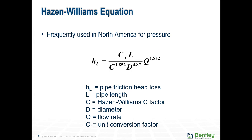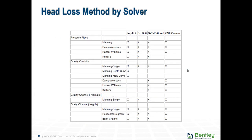Here's the Hazen-Williams equation, which we typically use for pressure systems. In this case, you need to know the Hazen-Williams C factor — again, this is experimentally obtained — and all the other values are input values. All the head loss methods are available depending on what solver you're using. When you use the GVF rational solver, you have almost all those methods available.